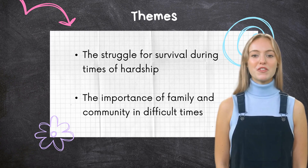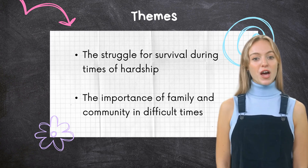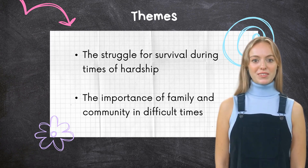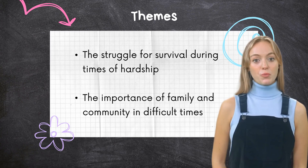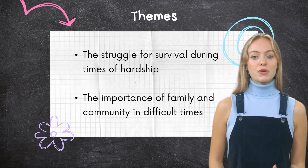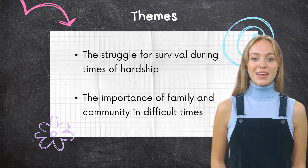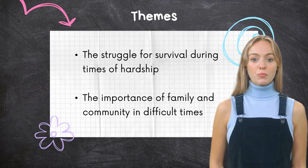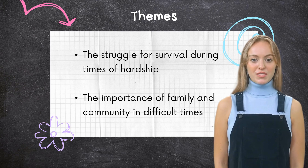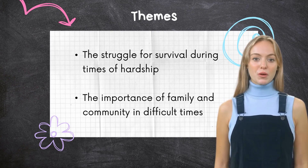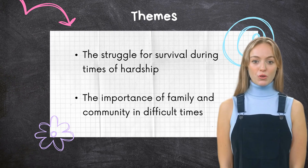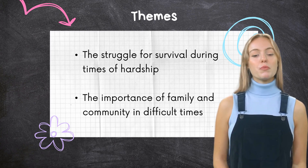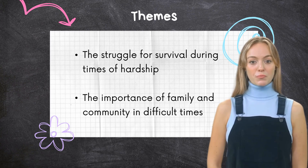They come to understand the importance of family and community in helping them weather the storm of economic hardship and social upheaval. The Joad family, in particular, serves as a powerful symbol of the importance of family and community in difficult times. Despite their many disagreements and conflicts, they remain bound together by their shared struggle and their love for one another. Overall, this theme is a powerful reminder of the resilience and strength of the human spirit in the face of adversity, speaking to the universal human experience of relying on others for support, and the potential for personal growth and social change that can emerge from the bonds of family and community.